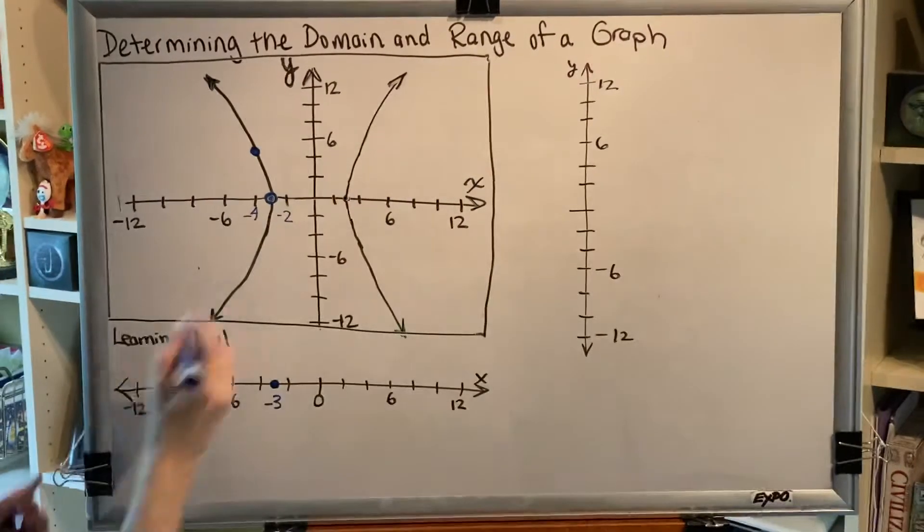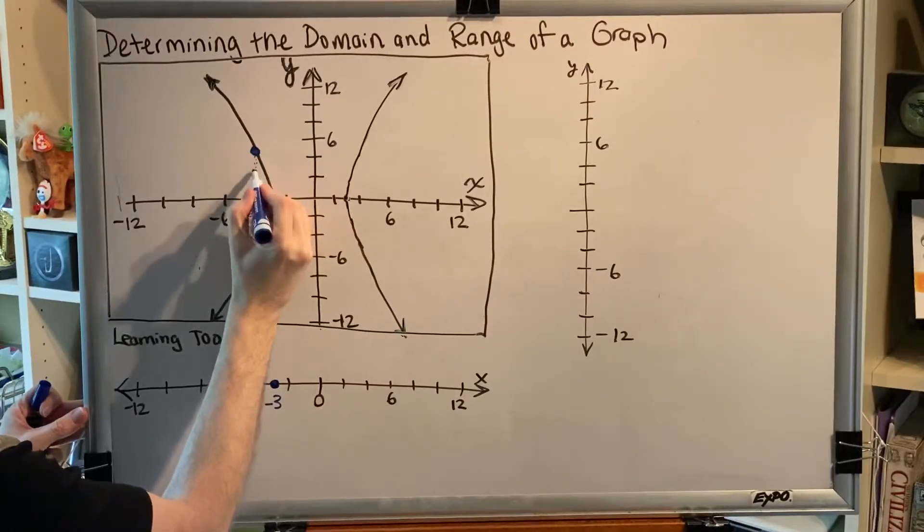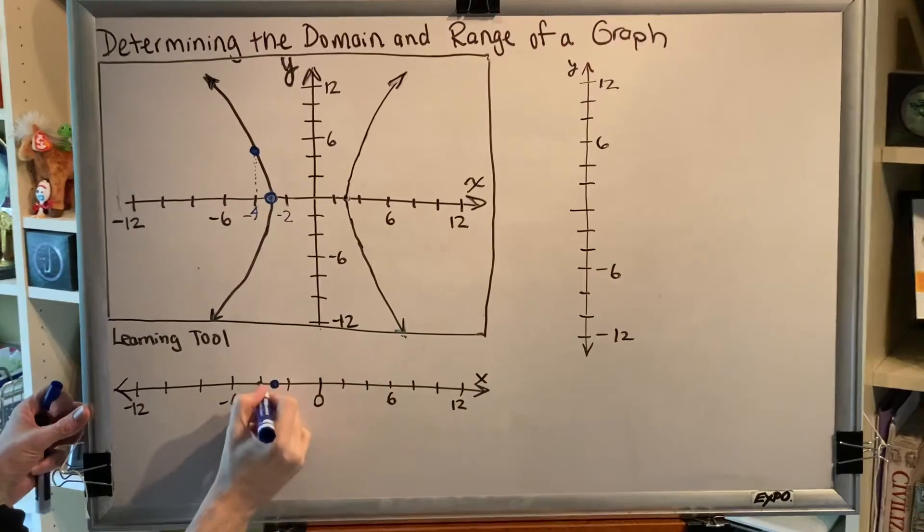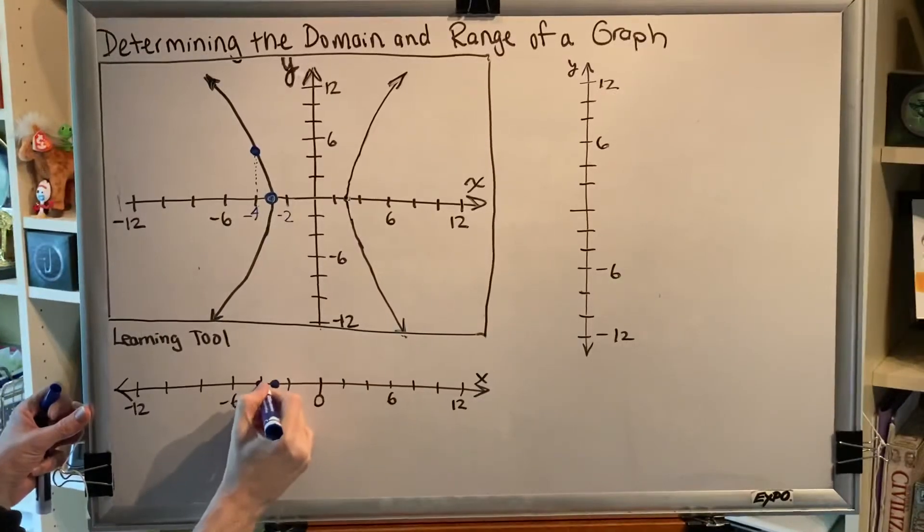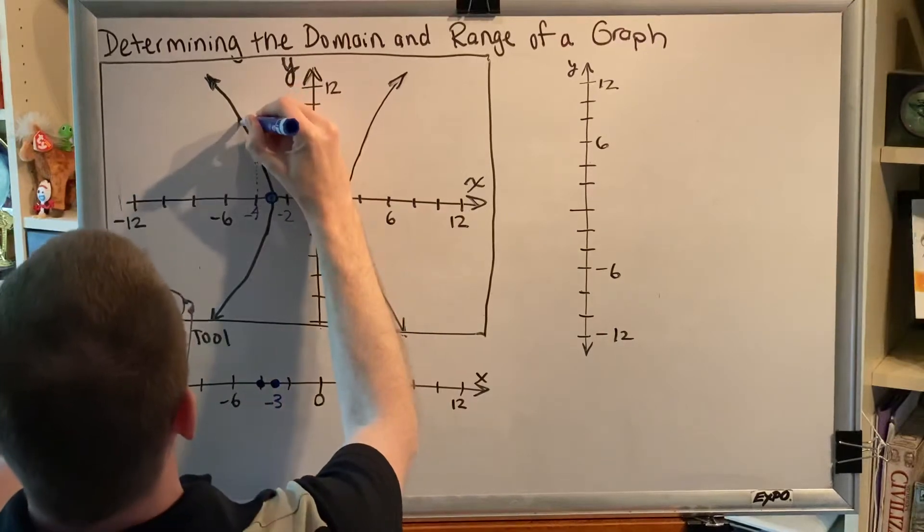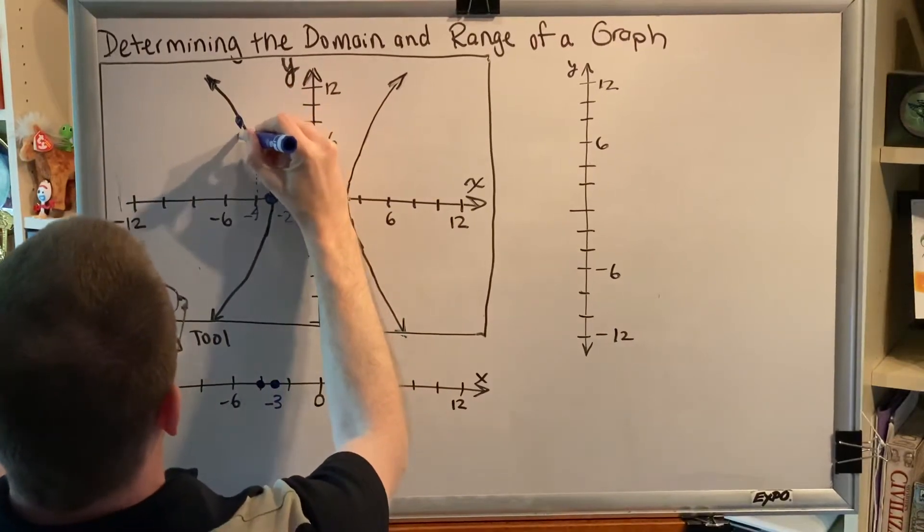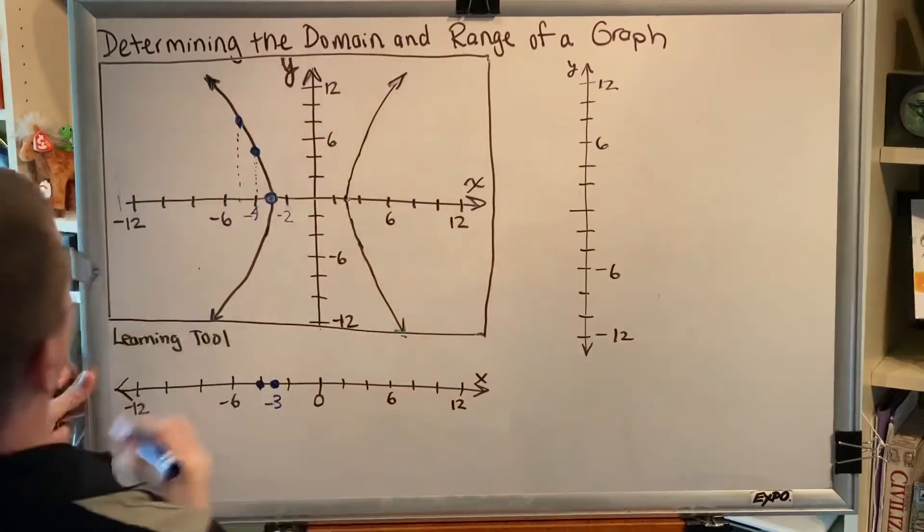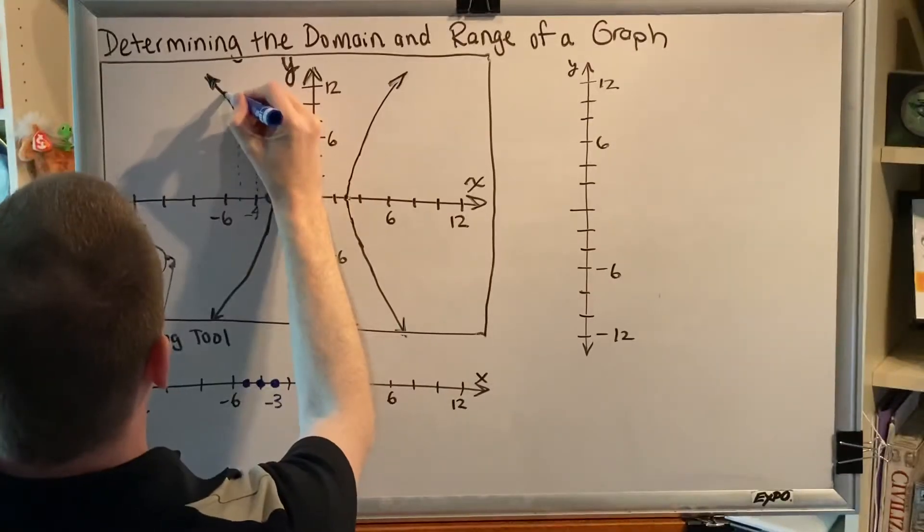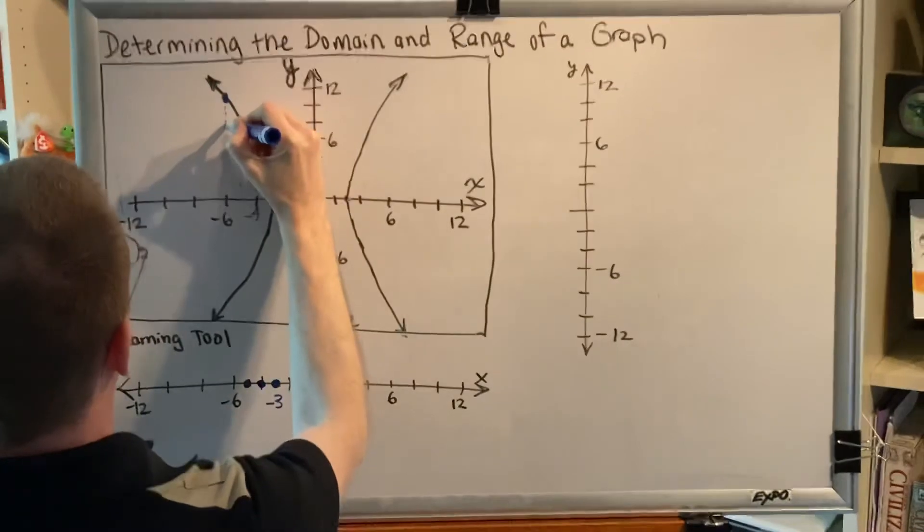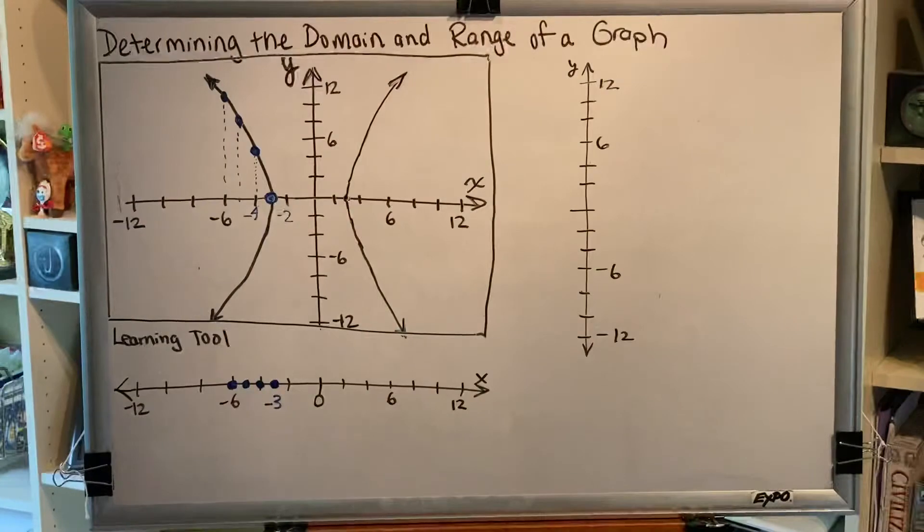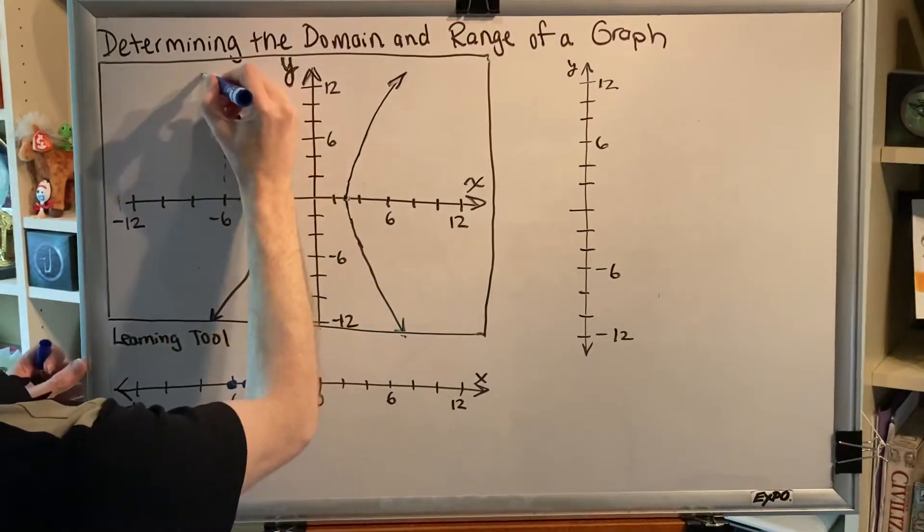Alright, what's the x-coordinate of that point? Well, if you trace it down, you find that the x-coordinate of that point is negative 4. So we're going to put a dot at negative 4 on our graph, and let's do another one. Let's do this dot right here, which we can see is at negative 5, and this dot right here, which we can see is at negative 6, and perhaps most importantly, this arrow.